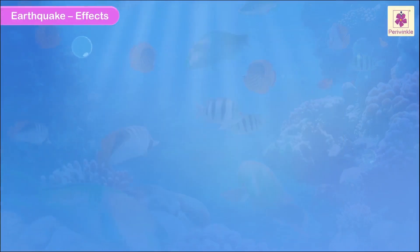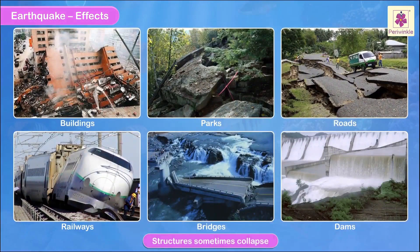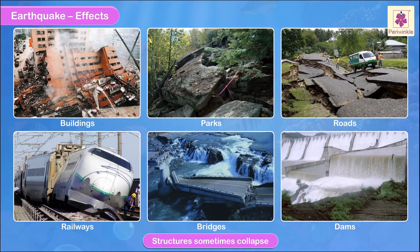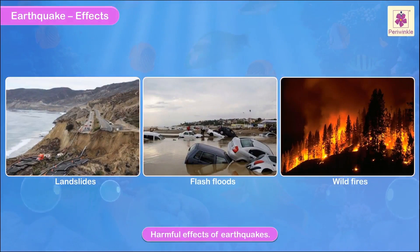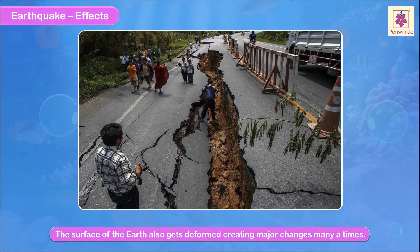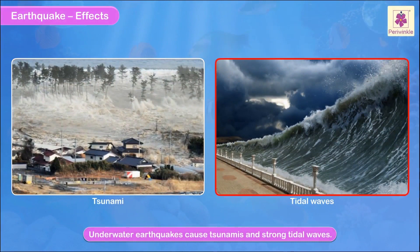Effects of earthquakes: Earthquakes cause immense damage and destruction of life and property. Man-made structures like buildings, parks, roads, railways, bridges, and dams sometimes collapse. Landslides, flash floods, and wildfires are also some harmful effects of earthquakes. The surface of the earth also gets deformed, creating major changes. Many times, underwater earthquakes cause tsunamis and strong tidal waves.